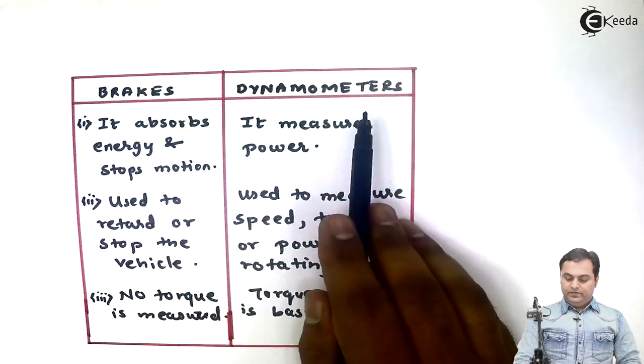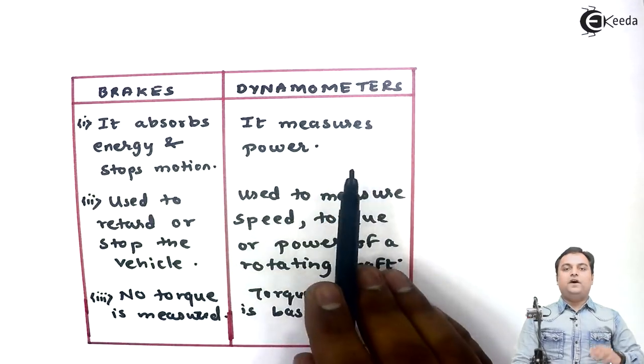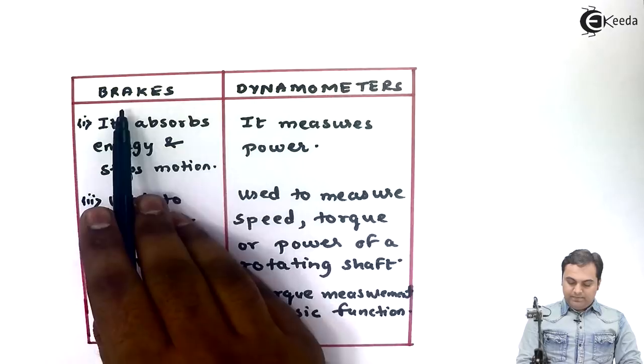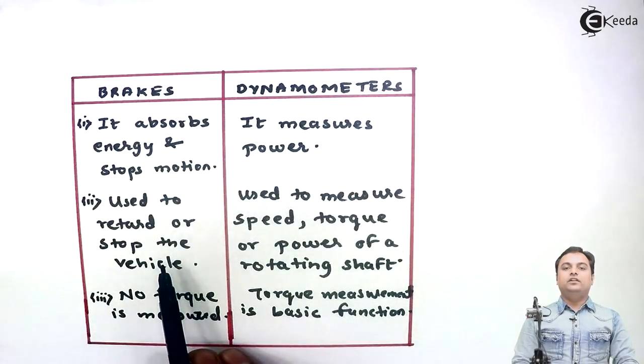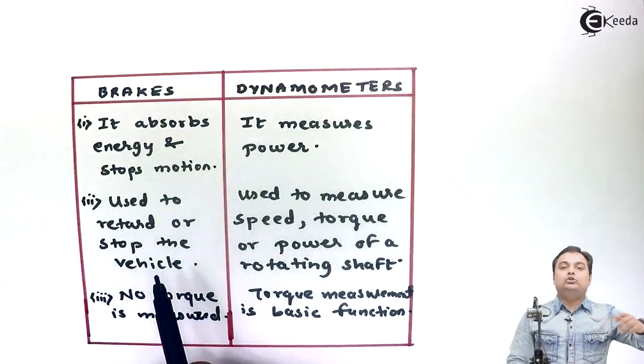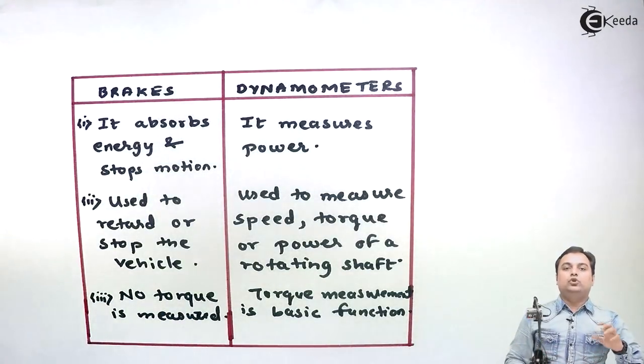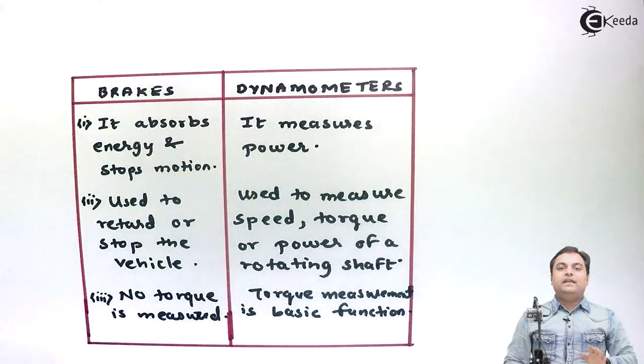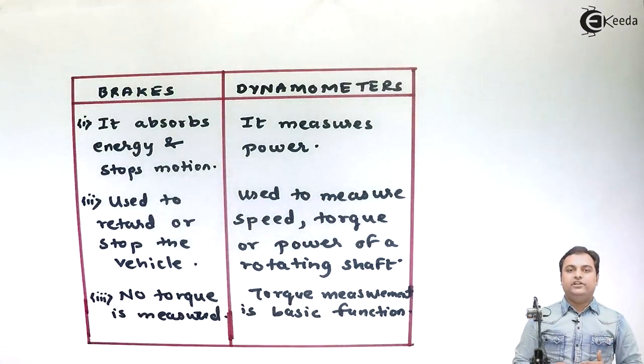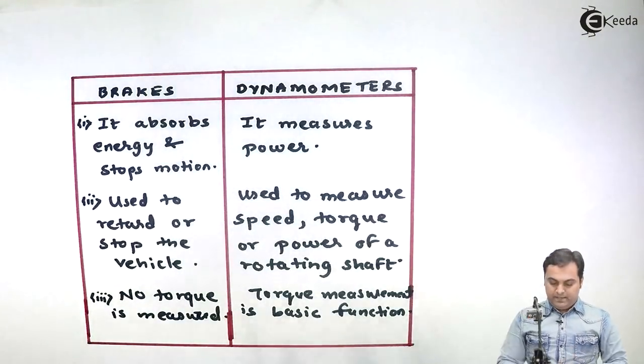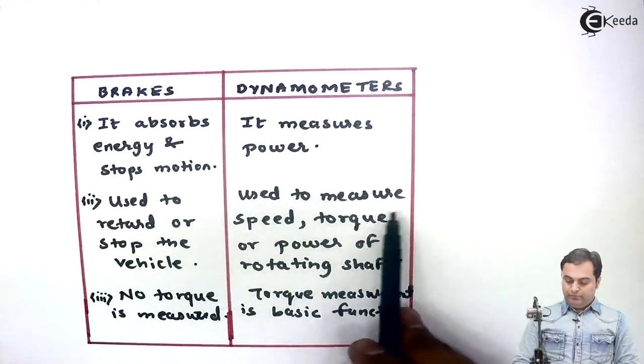In brakes it is used to retard or stop the vehicle. Retard means to slow down the motion. When we are driving we slow down, so brake helps us to control the speed of the vehicle or to stop the vehicle. Dynamometer is used to measure speed, torque or power of a rotating shaft.